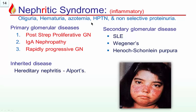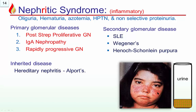Coming to nephritic syndrome: in nephritic syndrome there is oliguria, hematuria, azotemia, hypertension, and minimal non-selective proteinuria. Three common conditions: post-streptococcal proliferative glomerulonephritis, IgA nephropathy or Berger's disease, and rapidly progressive glomerulonephritis. Note that SLE can produce nephrotic syndrome, nephritic syndrome, and rapidly progressive glomerulonephritis — all can be possible.